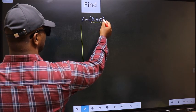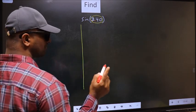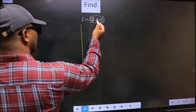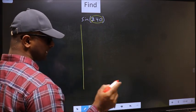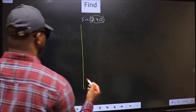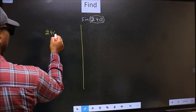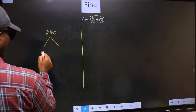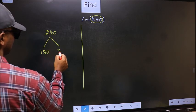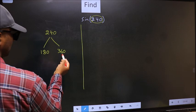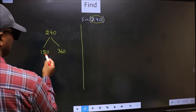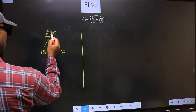Here we have 240. Now you should check: 240 lies between which two multiples of 180. What I mean is, 240 lies between 180 and 360. This is 180 into 1, this is 180 into 2. Between these two numbers, 240 lies.